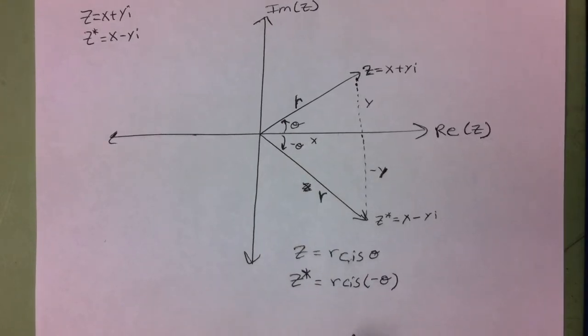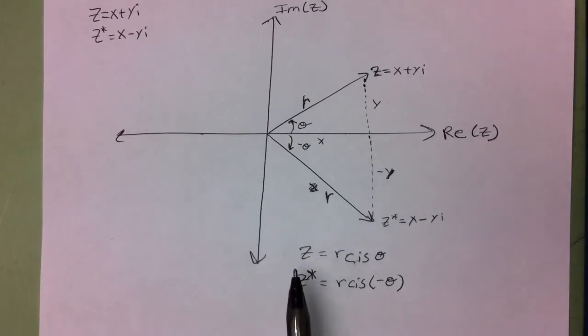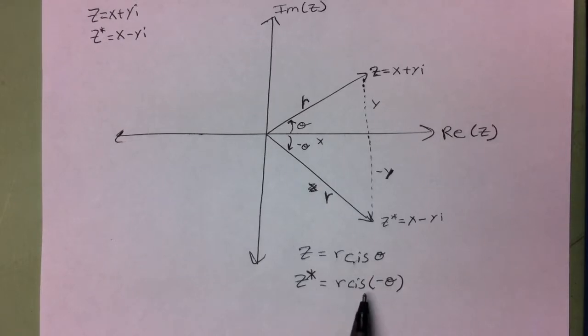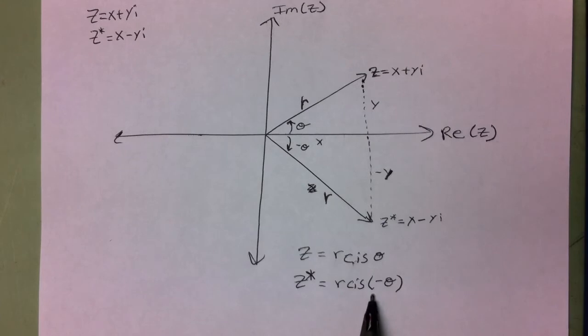And so when we express that, if we have r cis form, z equals r cis theta, then we'll write z-conjugate as r cis of negative theta, because the r is staying the same, but the direction we are rotating is the opposite. And so it's cis of negative theta instead of cis of theta.